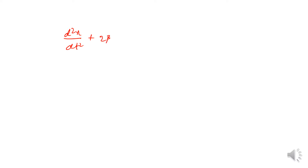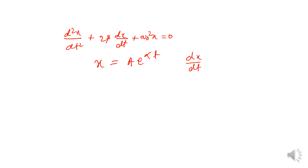In the previous video, we discussed damped oscillation and the differential equation: d²x/dt² + 2β(dx/dt) + ω₀²x = 0. For this differential equation, we considered a general solution where x can be written as A·e^(αt). We found dx/dt and d²x/dt², substituted, and got a quadratic equation, which we solved to get the values α₁ and α₂.